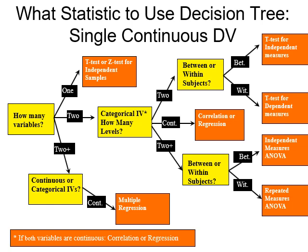If we have two categories within that independent variable but they're the same people being exposed to different conditions, we're at the t-test for dependent measures or within-subjects design. Going back to the categorical IV path: if the answer is more than two levels, we go down a different path and again face the question of between or within-subjects. Three or more groups with different people in each → independent measures ANOVA. Same people in every group (highly matched or repeated) → repeated measures ANOVA.